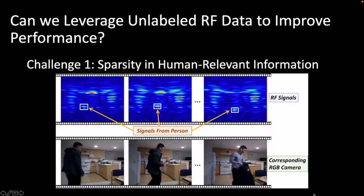The first challenge we are facing is that compared with RGB data, the information region in RF signals that corresponds to the person could be extremely small. RF signals carry much information that is irrelevant to the person or task, for example sub-signals that reflect off walls. In this figure, only the signal in the white box corresponds to the person of interest.